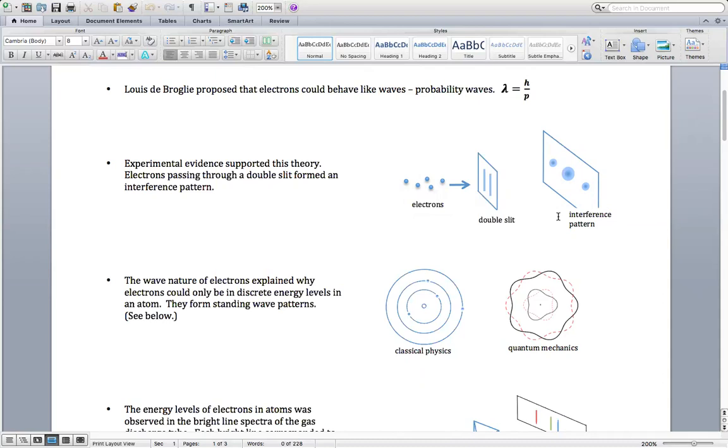This is an example of particles behaving like waves. We don't normally see that on our scale. I can't throw tennis balls through windows and find an interference pattern. That's because the scale is too large. On the microscopic, subatomic scale, it does work that way. Electrons can behave like waves, and that's the experiment that demonstrates it.